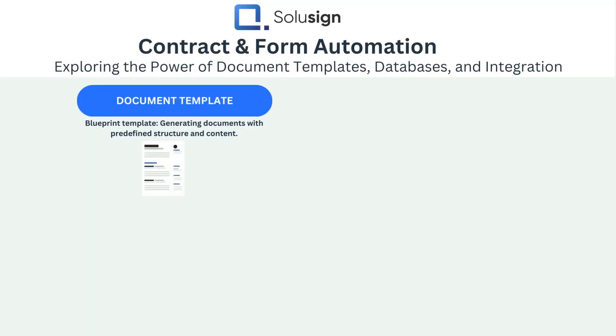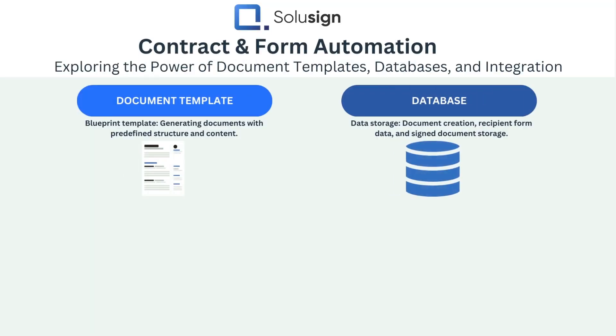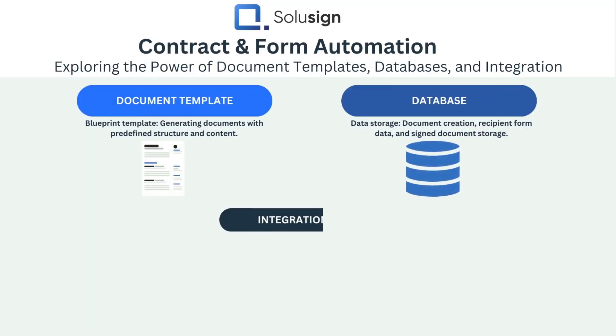Now, if you want to automate your contracts and forms, you need three main ingredients. The first ingredient is a document template, the second is the database, and the third is an integration.